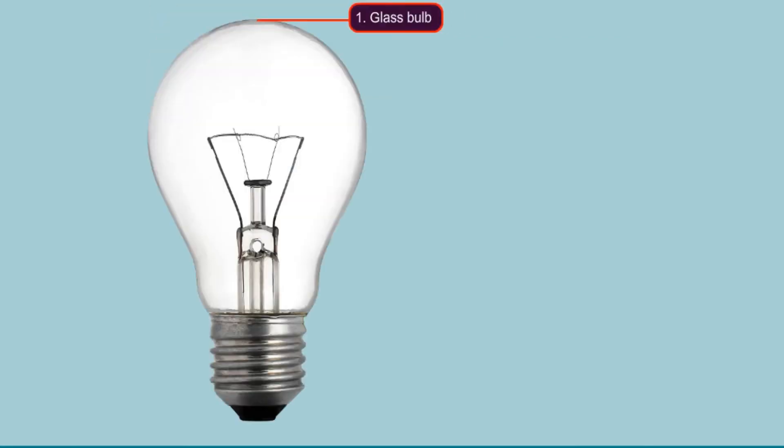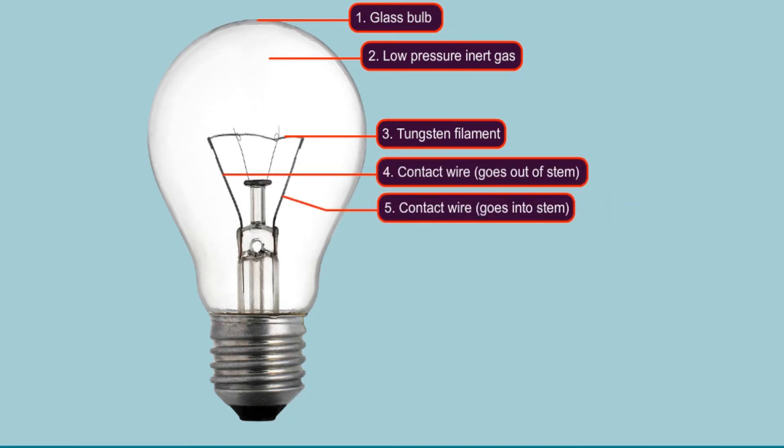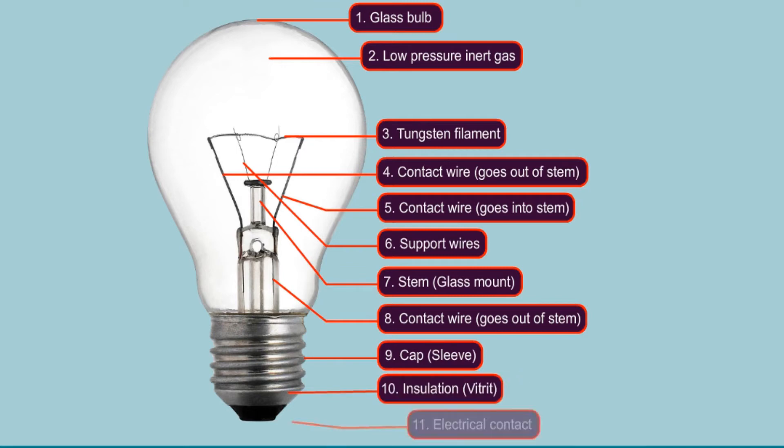Let us now look at an electric bulb: 1. Glass bulb, 2. Low pressure inert gas, 3. Tungsten filament, 4. Contact wire goes out of the stem, 5. Contact wire goes into the stem, 6. Support wires, 7. Stem glass mount, 8. Contact wire goes out of the stem, 9. Cap sleeve, 10. Insulation, 11. Electrical contact.